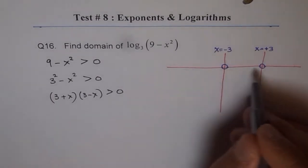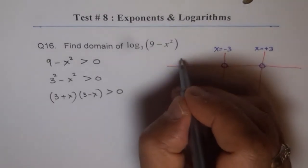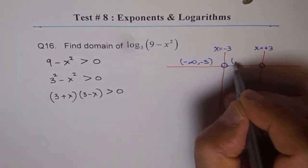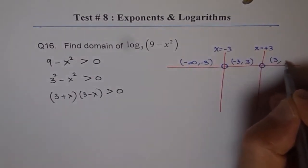These 2 points divide the whole domain in 3 regions. This region is from minus infinity to minus 3. This is from minus 3 to 3. And this is from 3 to plus infinity.